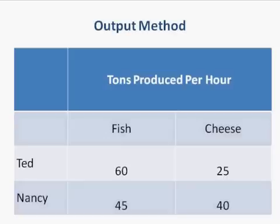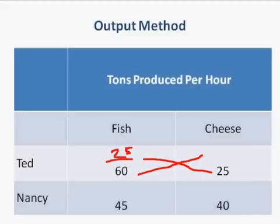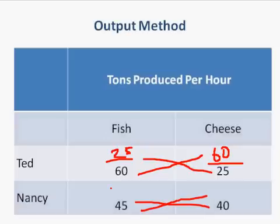To do this, we're going to cross-divide for each good. The easiest way to remember is it's going to be over. So you put the 25 over 60, and the 60 over 25, and the 40 over the 45, and 45 over 40.